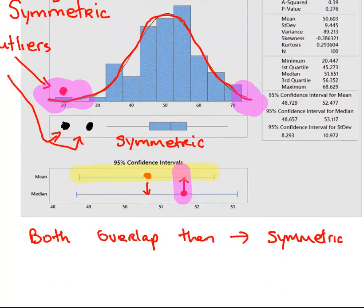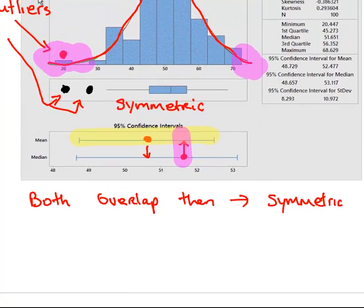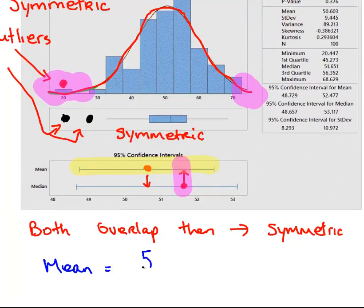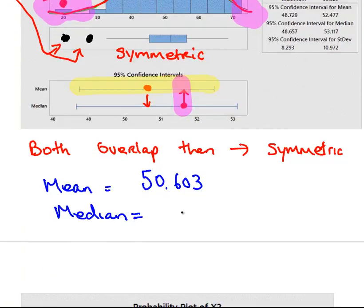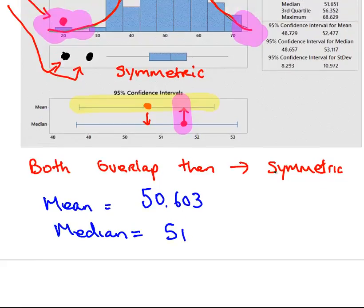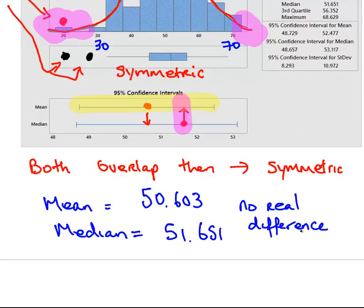Now let's go back up here. We're going to have a look at the mean and median. For this data set, mean is 50.603. The median is 51.651. They're close enough to each other. If you consider that the mean range of values here is between 30 and 70, most of our data is between 30 and 70. That's not much of a difference. No real difference, no significant difference between the mean and the median. So that indicates symmetry also. It reinforces symmetry once more.